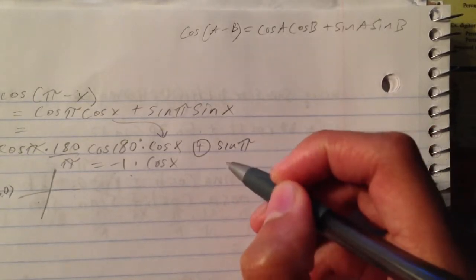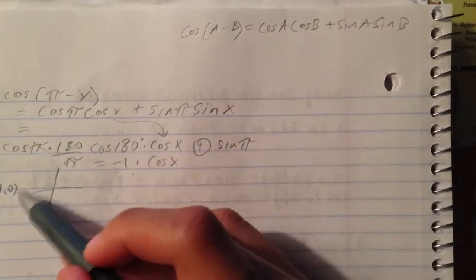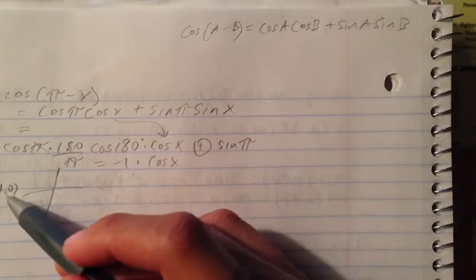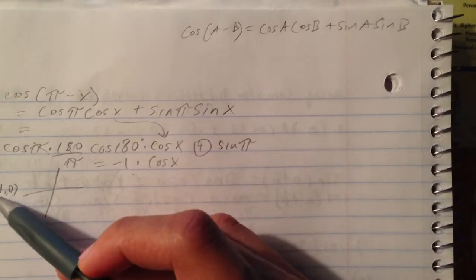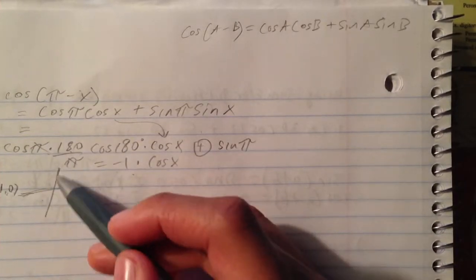So now the question is what is sine pi. We just figured out that pi is 180, and sine in this quadrant is a quadrant angle. It's going to be 0.